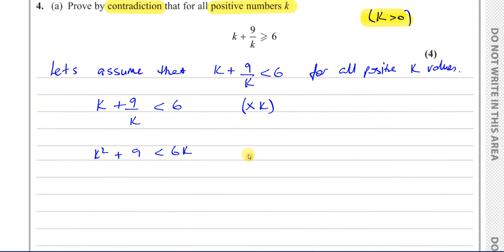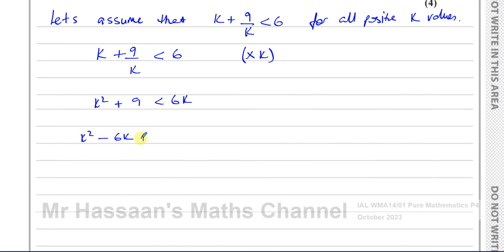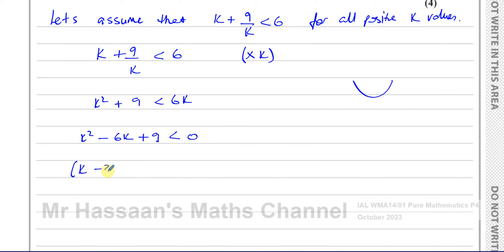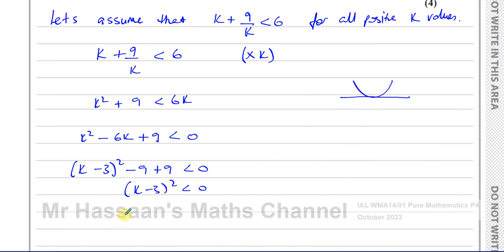Rearranging this inequality gives k² − 6k + 9 < 0. This is a quadratic. To find its minimum, we complete the square. This turns out to be a perfect square: k² − 6k + 9 = (k − 3)². So completing the square gives (k − 3)² < 0. The minimum value of (k − 3)² is zero, so it hits the horizontal axis at zero and cannot go below it.